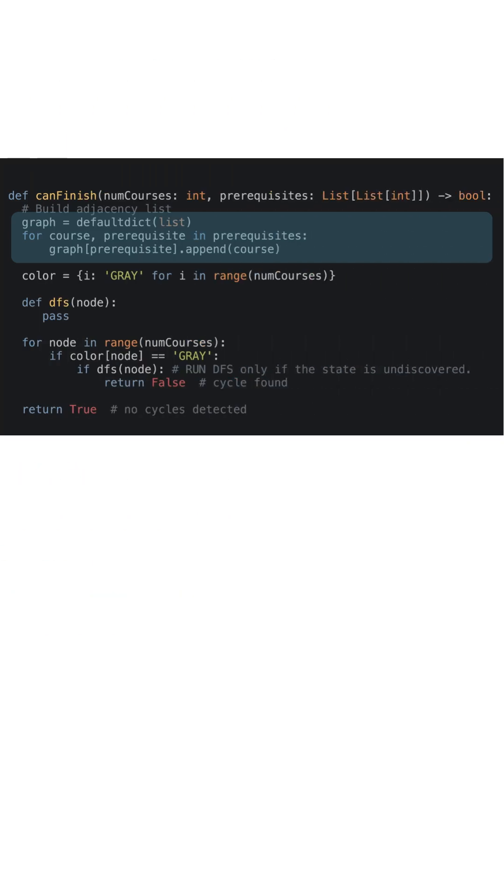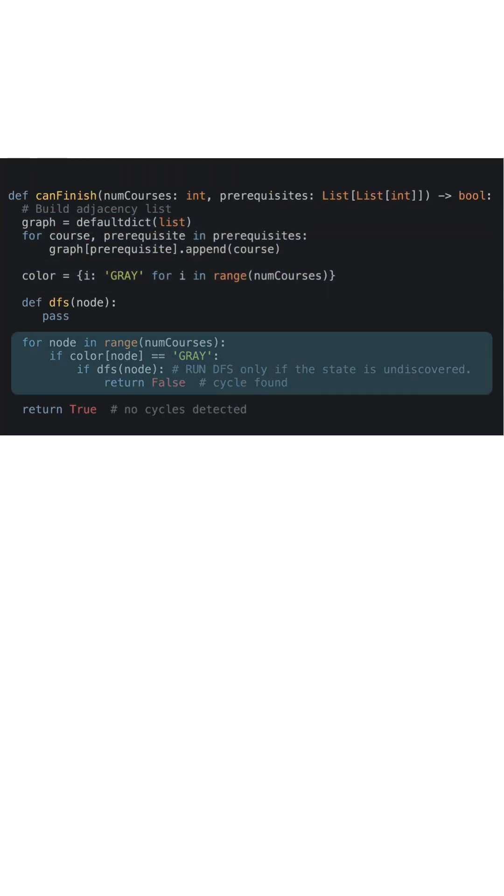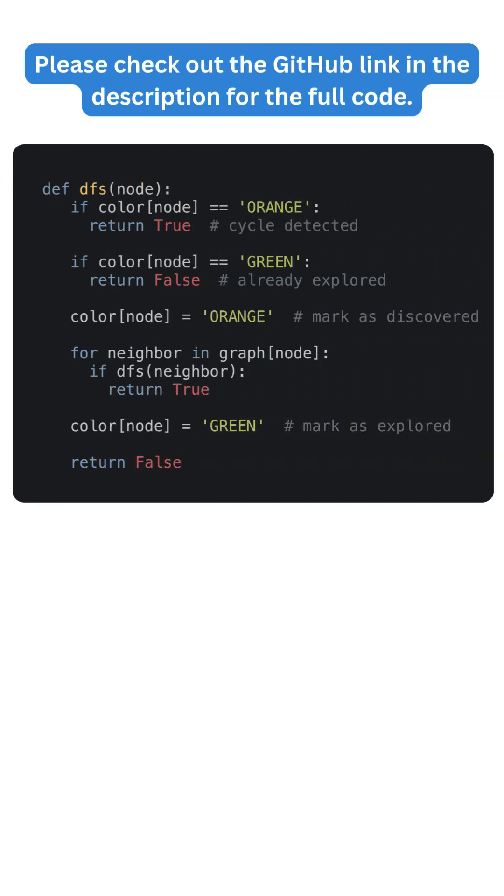Here's the code to build the adjacency list, dictionary to track node states with colors, and run DFS on undiscovered nodes. And here's the DFS function that handles the traversal and color update.